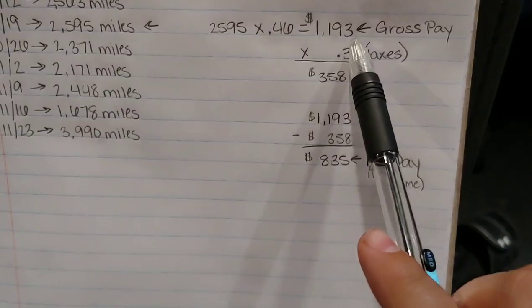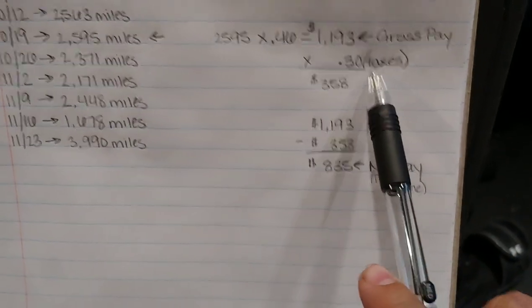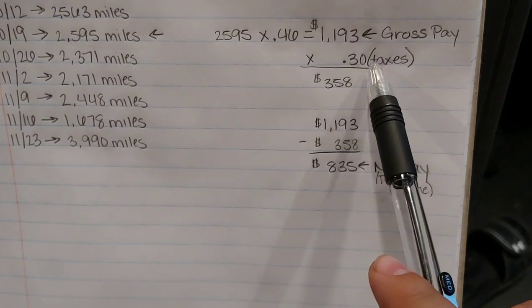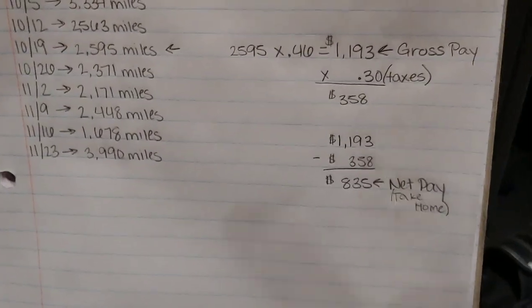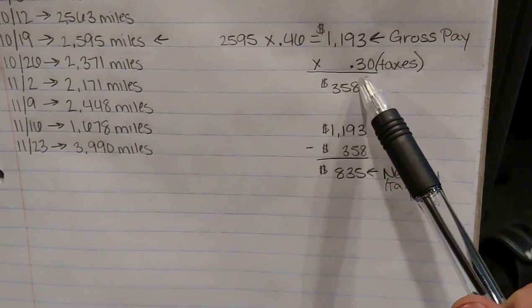So you're going to take this number and you're going to times it by your taxes. Taxes here are about 30%. I don't know if they're the same everywhere, but every time I do it, it's about 30%.